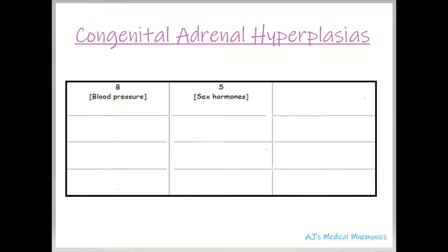Let's talk about congenital adrenal hyperplasias. There are three we're going to discuss: 17α, 21, and 11β. To know which symptoms each hyperplasia is associated with, we want to determine whether each involves increased or decreased blood pressure or sex hormones.